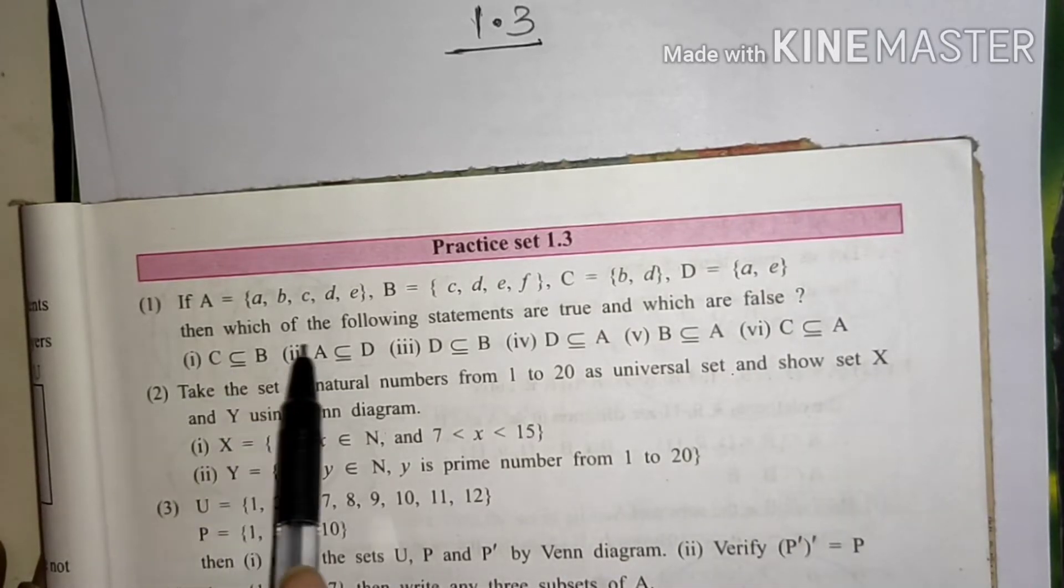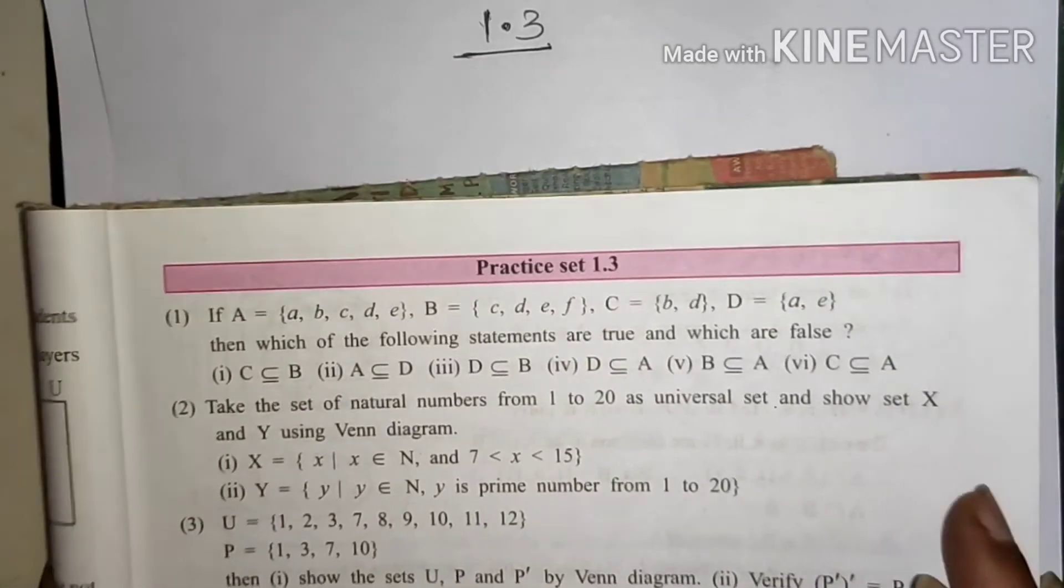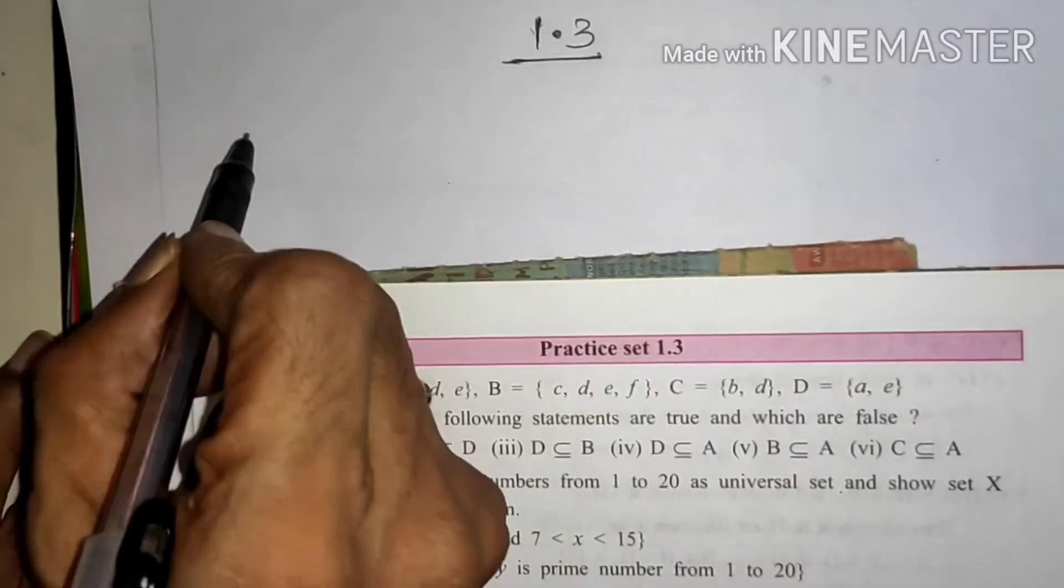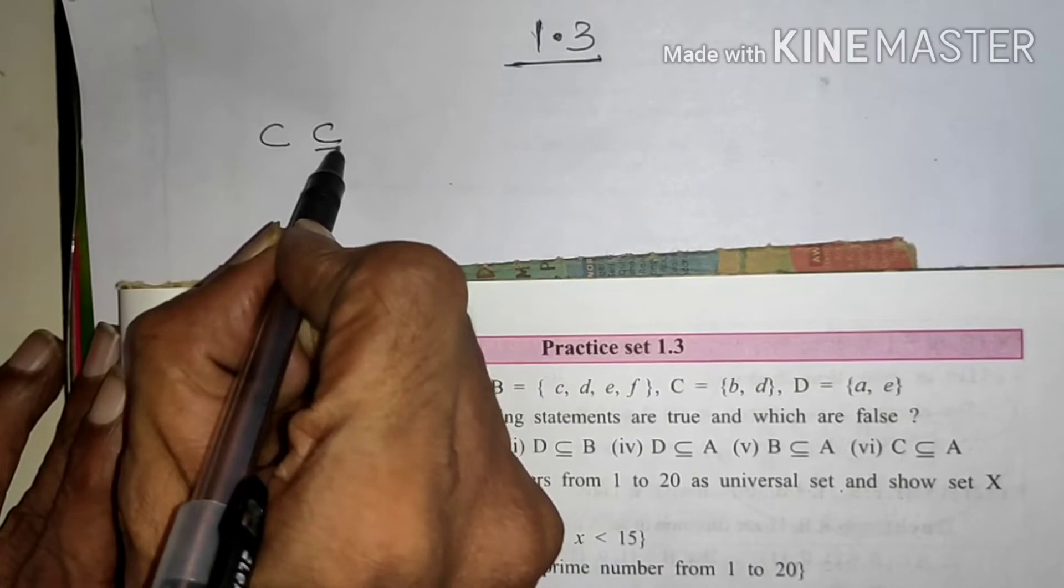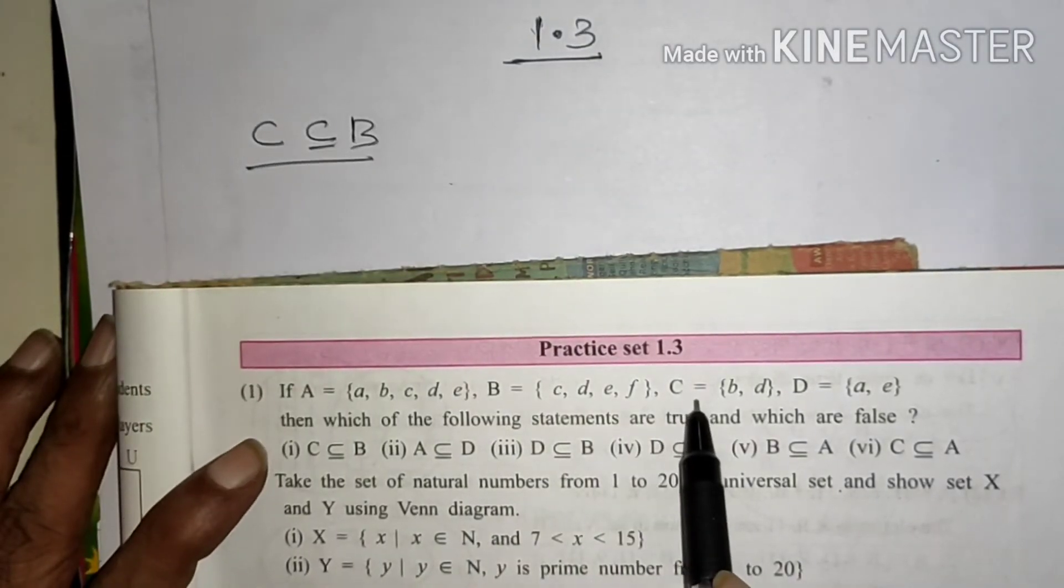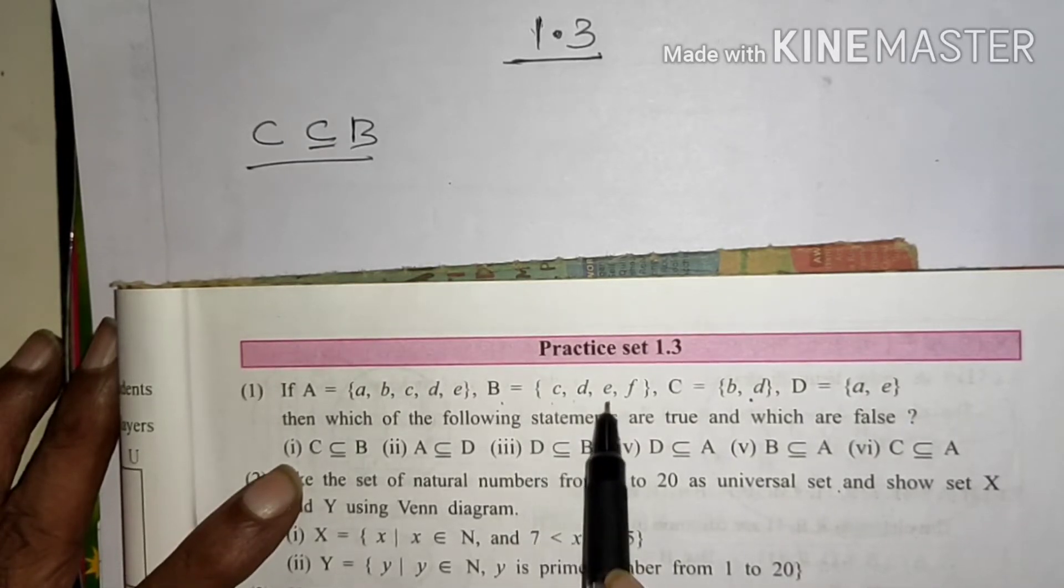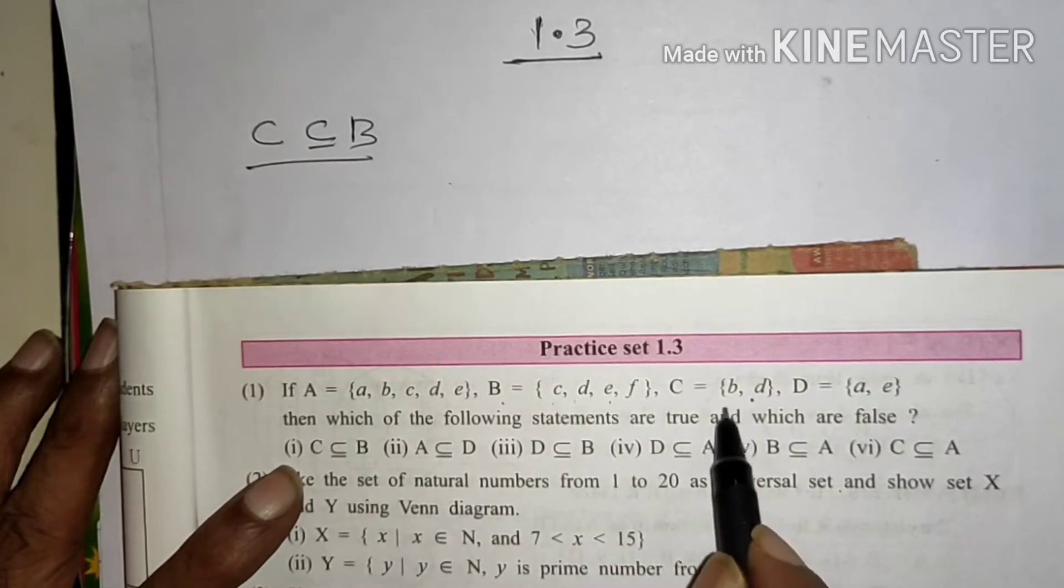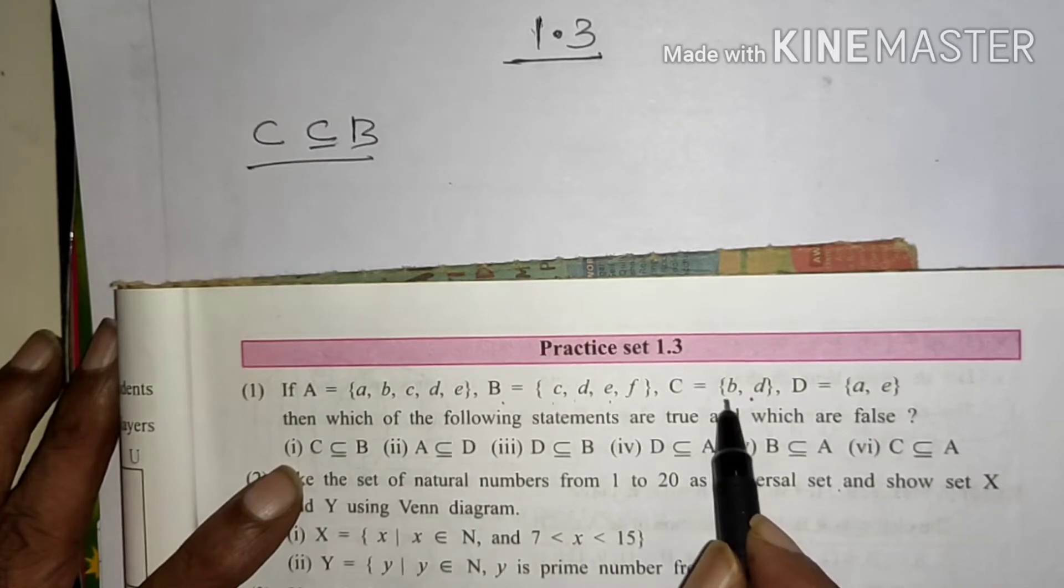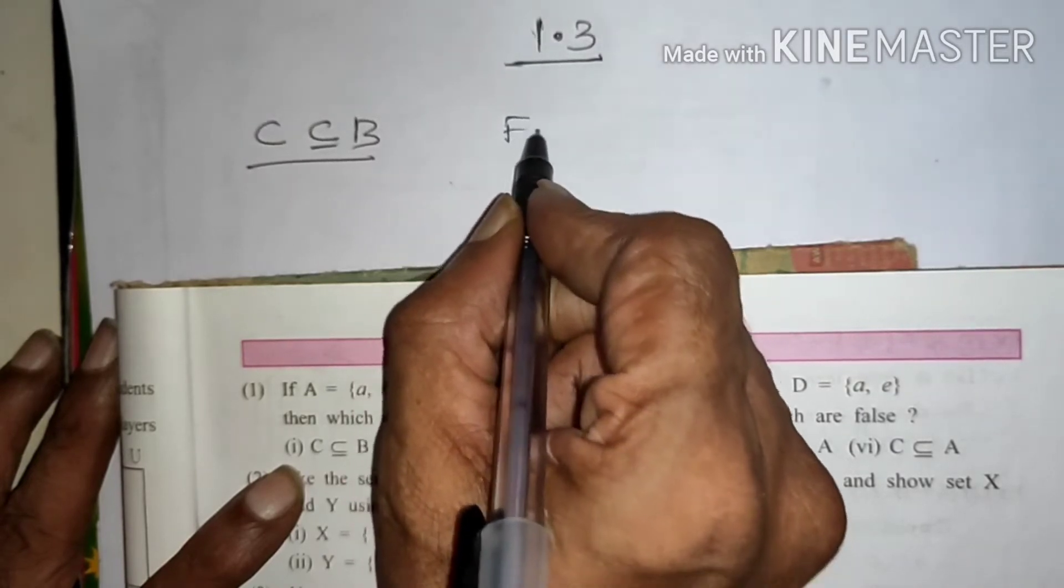First, set C is subset of B. Let us see, C ke element is B or D, B ke element is C, D, E. C ke element B jo hai, D element ki jo B mein nahi hai, that is it is false.